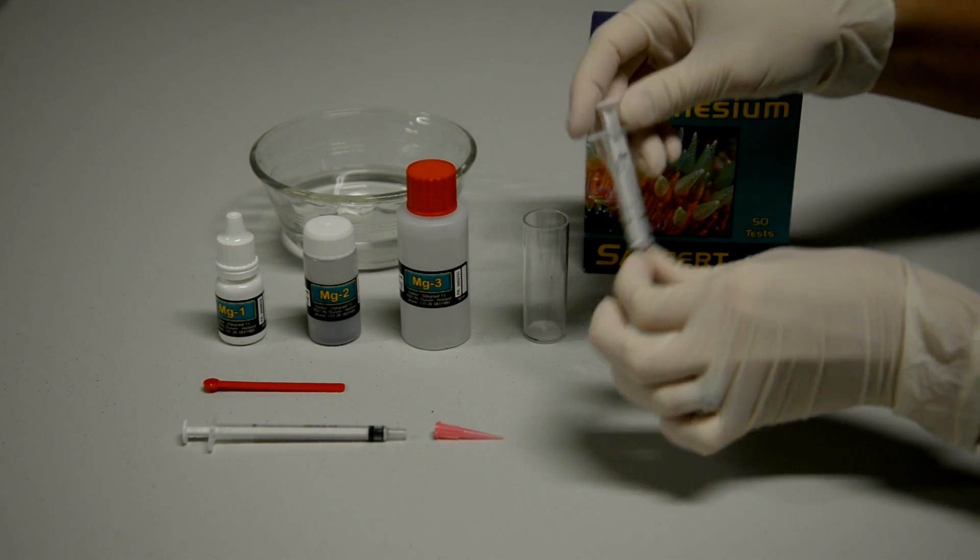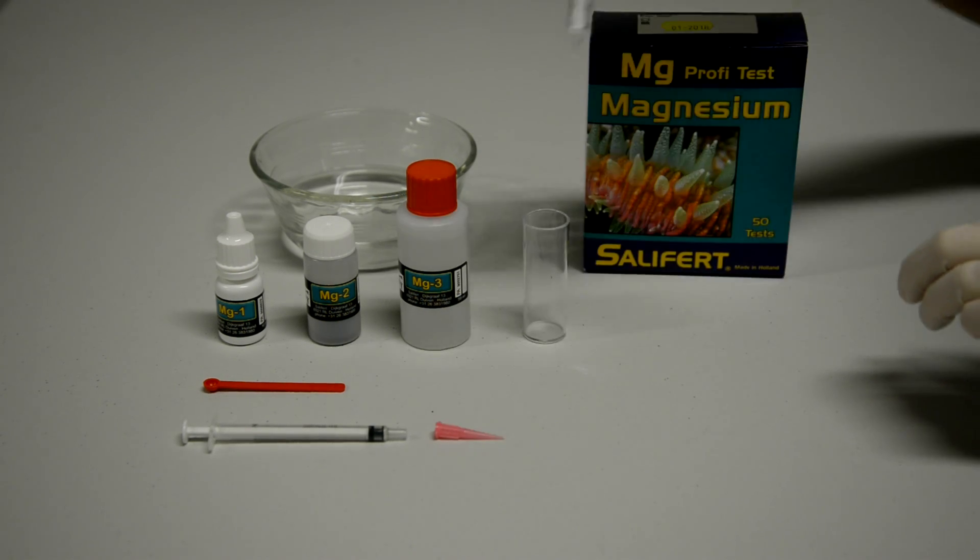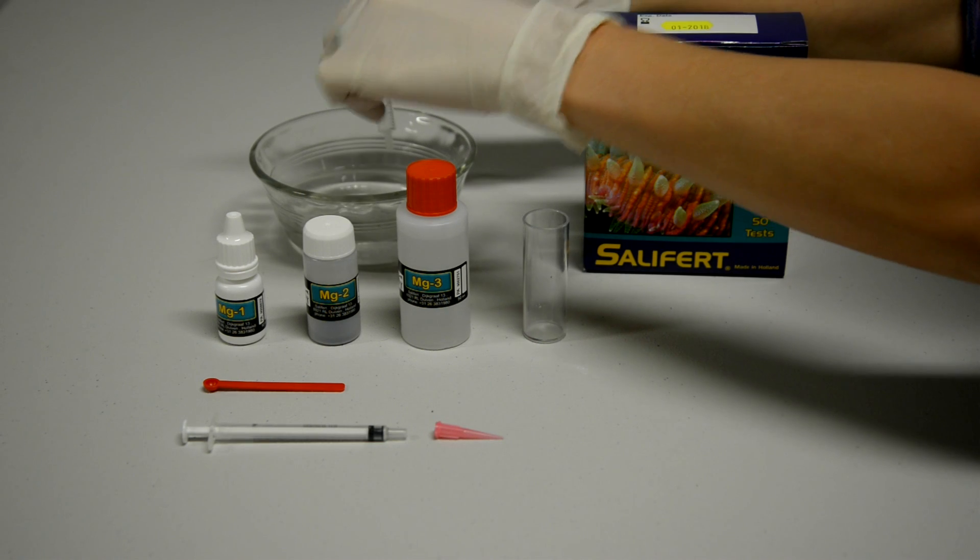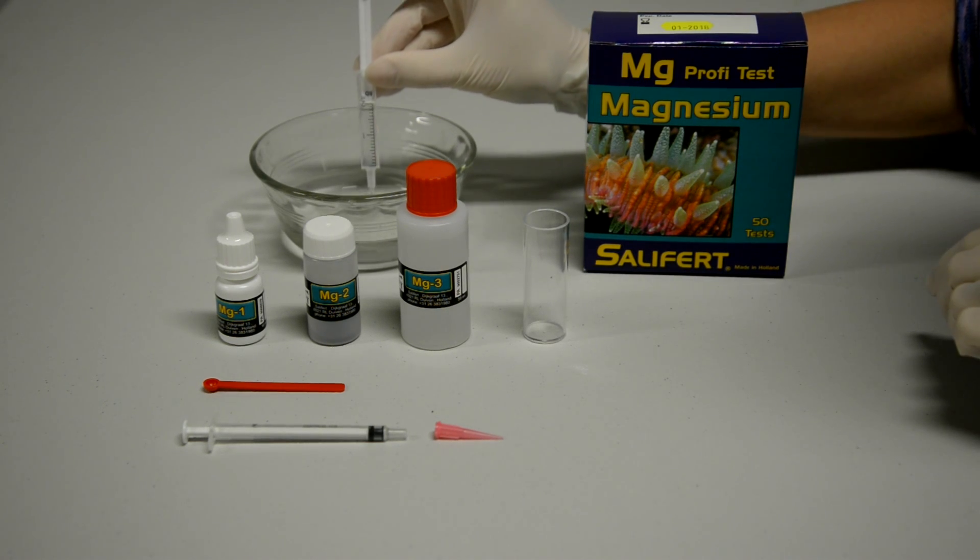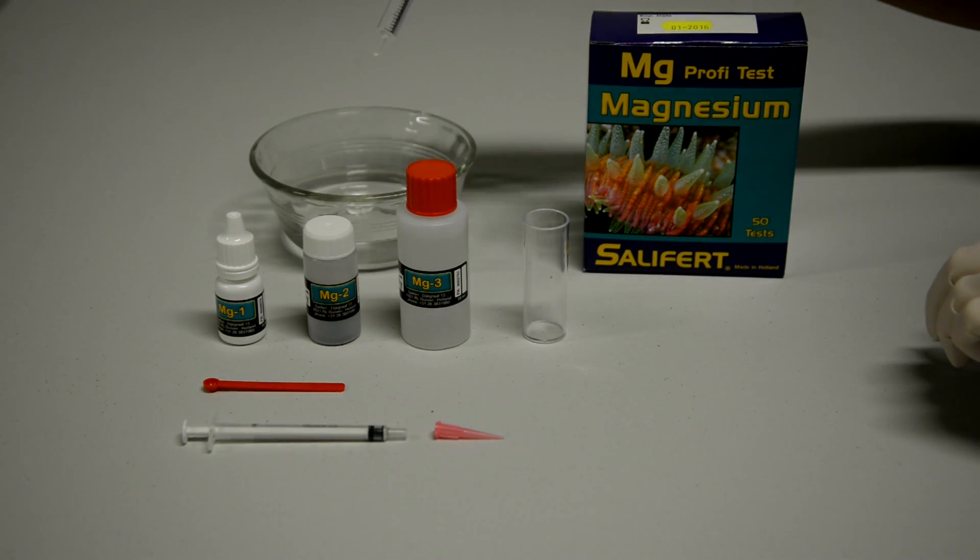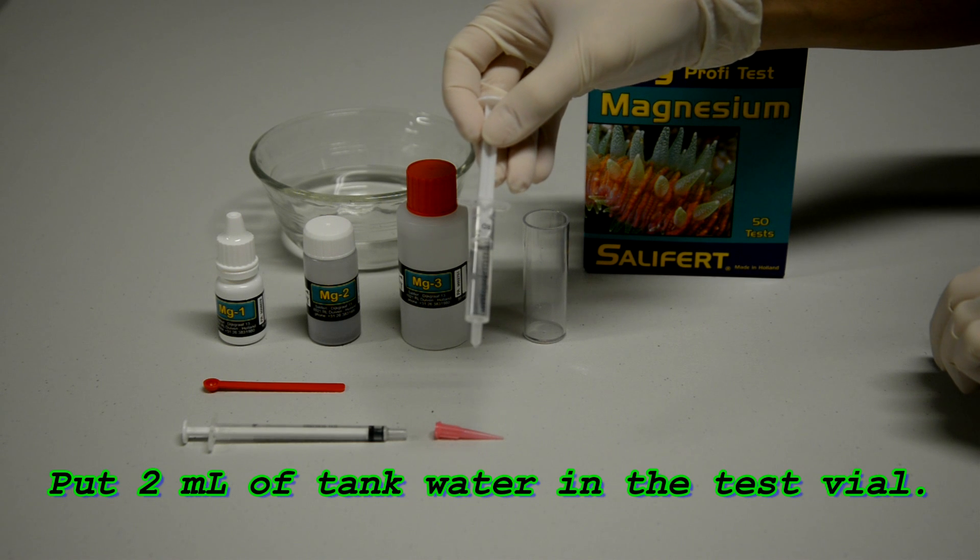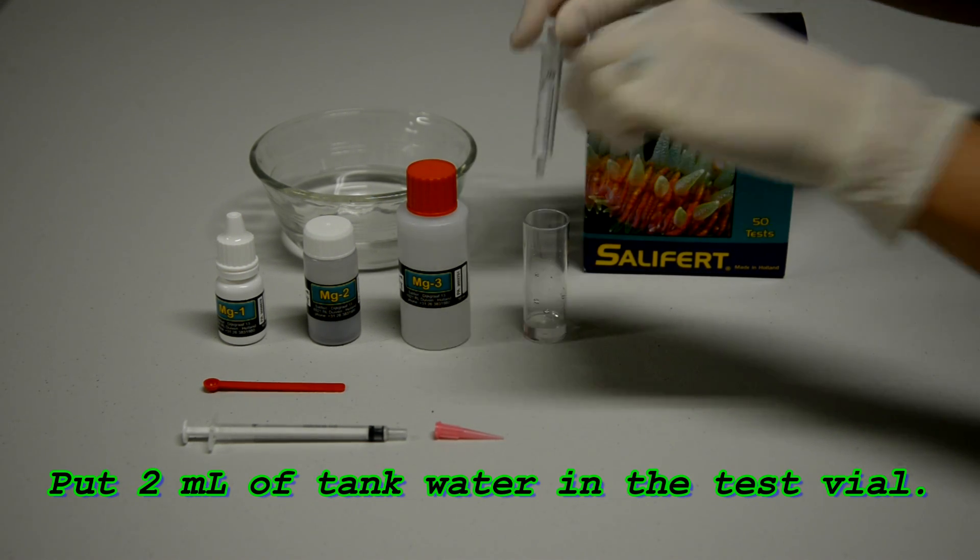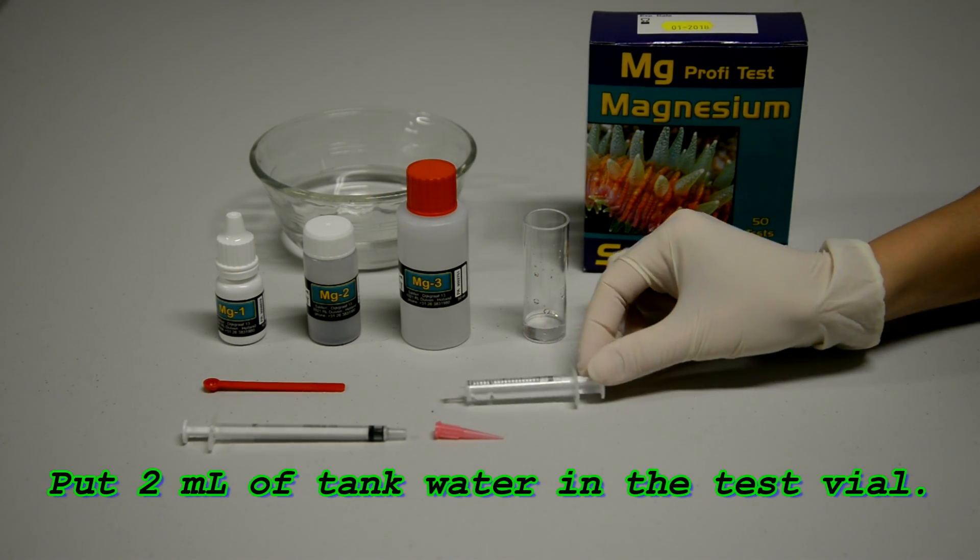So you're going to start with the bigger syringe, take a sample of your water from your tank, you're going to put that into the test vial. That's actually 2 ml of your tank water. You want to make sure that the syringe plunger is at the 2 ml line, don't worry about the bubble.